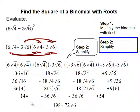Now we combine like terms. 144 plus 54 is 198. Negative 36 root 6 minus 36 root 6 gives us negative 72 root 6. So our final answer is 198 minus 72 root 6. This completes our problem.